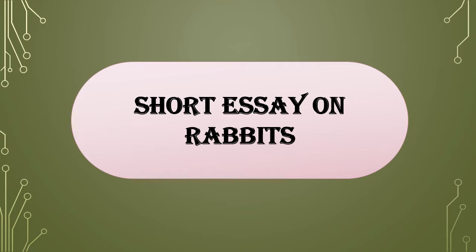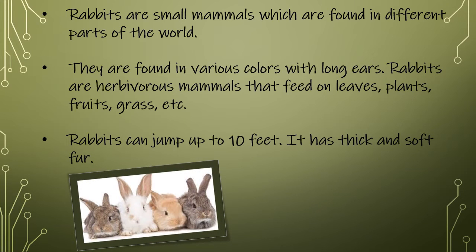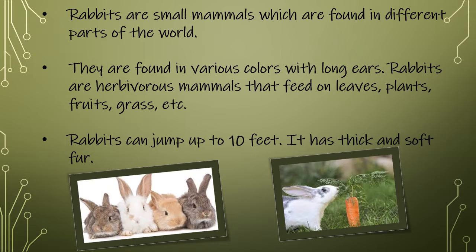Rabbits are small mammals which are found in different parts of the world. They are found in various colors. Rabbits are herbivores, mammals that feed on leaves, plants, fruits, grass, etc. Rabbits can jump up to 10 feet high. They have thick and soft fur.